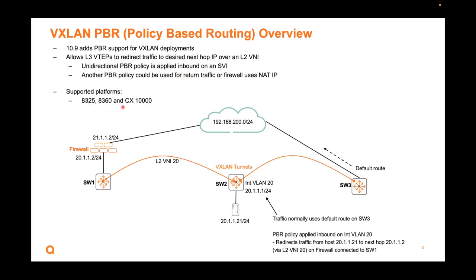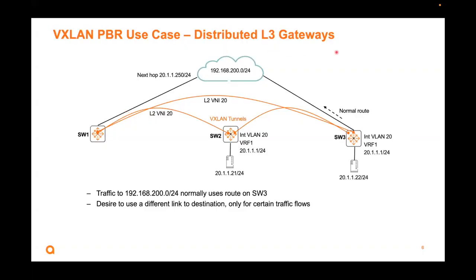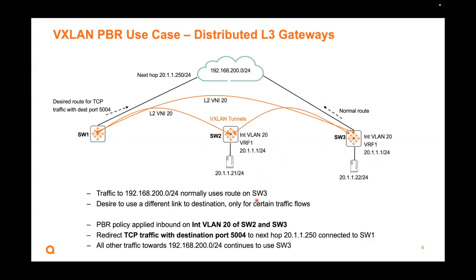It's supported on these three platforms. Use cases: you can use it with distributed layer 3 gateways. Here, switch 2 and switch 3 are distributed layer 3 gateways because they have the same IP address as the default gateway. This example uses the right-hand side as the normal route. If you want to use the left side only for certain flows, that's possible — you apply inbound on both gateways, switch 2 and switch 3. It can be selective: redirect only TCP traffic to a specific destination port to a next hop connected to switch 1, while all other traffic still uses the right-hand side.